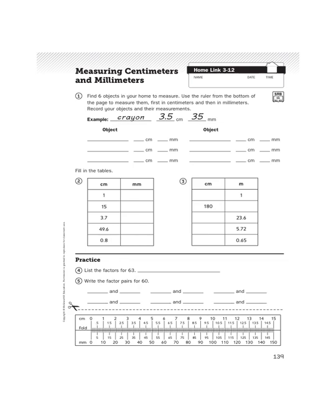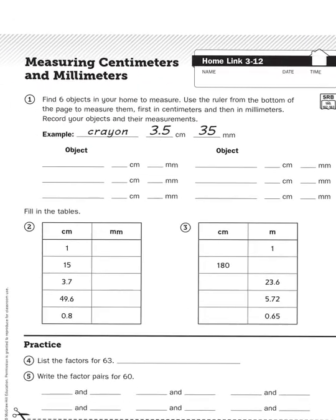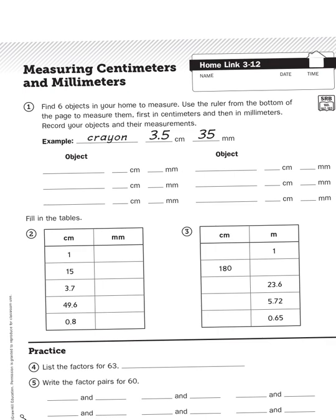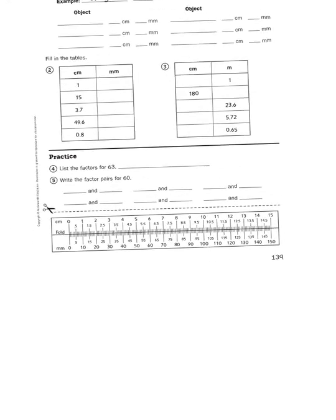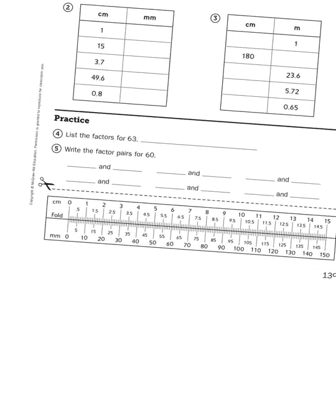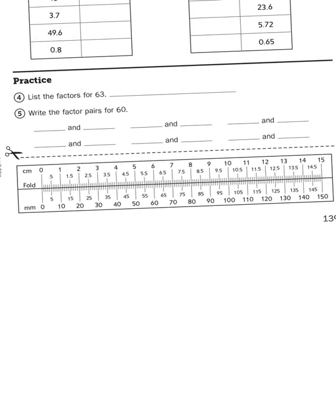If you take a look at problem number one, it asks you to find six objects in your home to measure. Use the ruler from the bottom of the page to measure them, first in centimeters and then in millimeters, and then record your measurements. You're going to want to pick something that is not any bigger than this ruler, so nothing bigger than 15 centimeters.